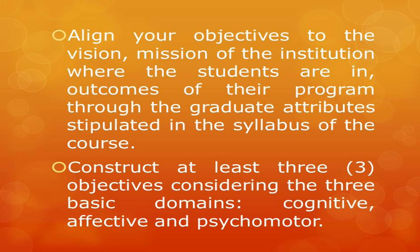Next, construct at least three objectives considering the three basic domains. The three basic domains are: cognitive, based on Bloom's taxonomy and revised by Anderson; affective, under Krathwohl; and psychomotor, under Harrow. This simply means you must have at least one objective per domain.